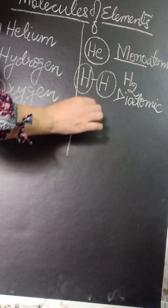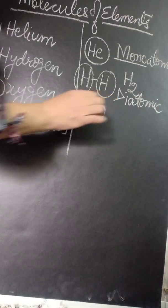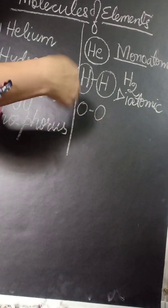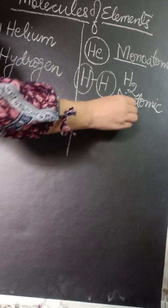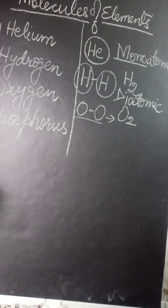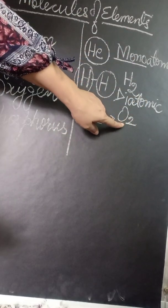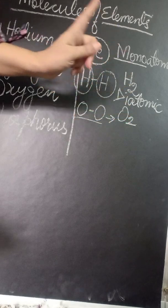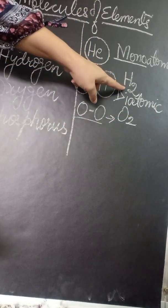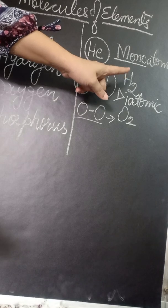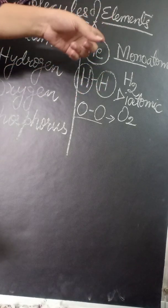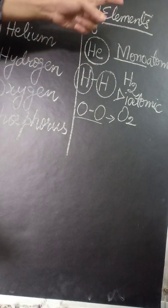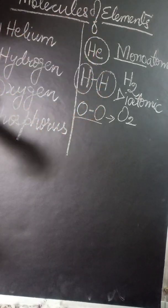Then next is oxygen. Oxygen also combines with another atom of oxygen and these two form a molecule O2. This is also diatomic because two is there. There are two atoms in one molecule of oxygen, two atoms of hydrogen in one molecule of hydrogen, and one atom of helium in one molecule of helium. So this is monoatomic and these two are diatomic.